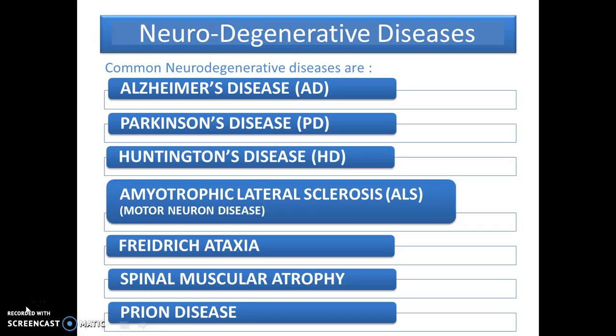Neurodegenerative diseases commonly are of six major types: Alzheimer's disease, Parkinson's disease, Huntington's disease, amyotrophic lateral sclerosis which is also called motor neuron disease, Friedreich's ataxia, spinal muscular atrophy, and prion disease.